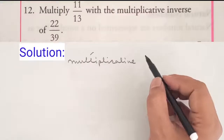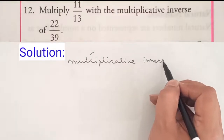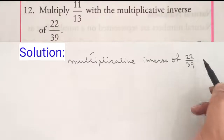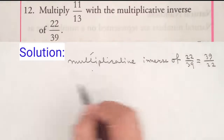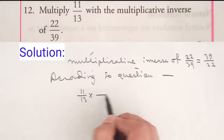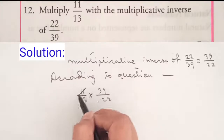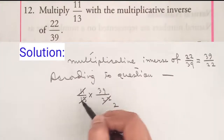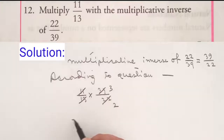Question 12: Multiply 11 by 13 with the multiplicative inverse of 22 by 39. The multiplicative inverse of 22 by 39 equals 39 by 22. According to the question, 11 by 13 into 39 by 22 — since 11 times 2 is 22 and 13 times 3 is 39, cancelling gives the answer 3 by 2.